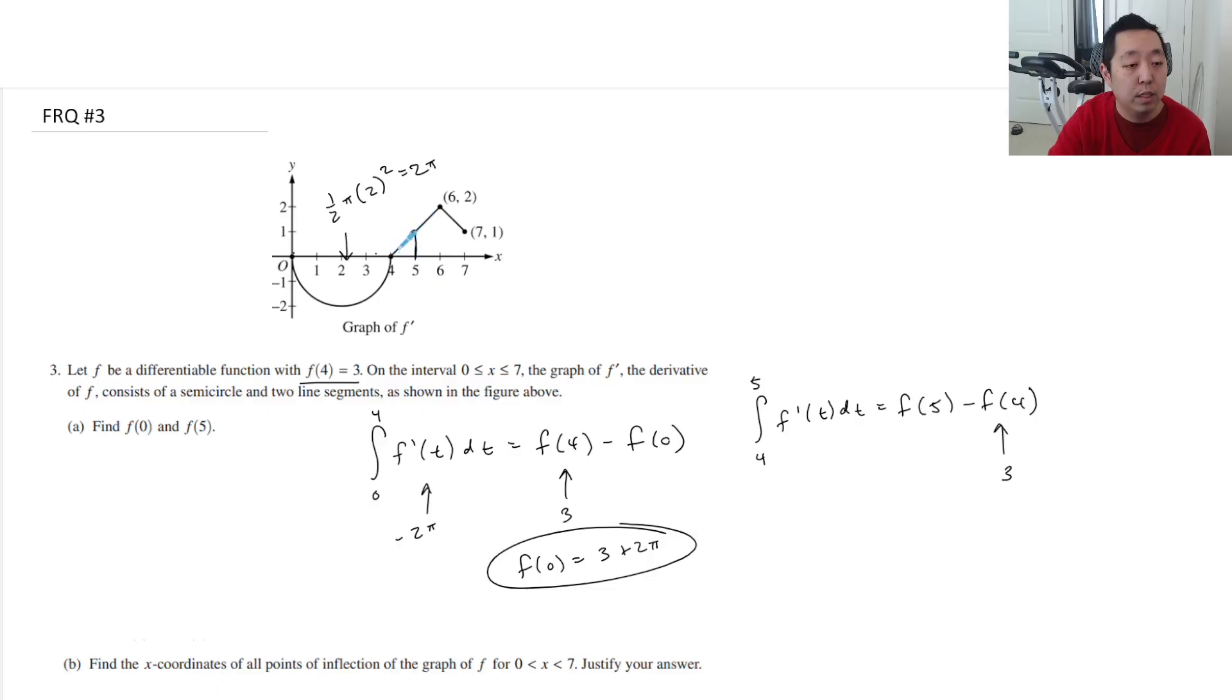So 1 by 1 is base is 1, height is 1, half of that is 1 half. So this is going to be 1 half. And so f of 5 is equal to 3 plus 1 half is 3 and 0.5 or 7 halves, right?